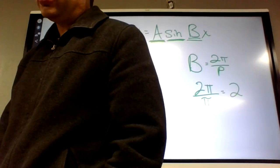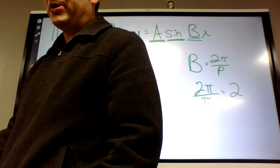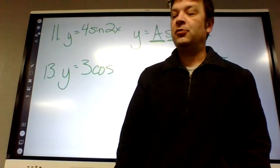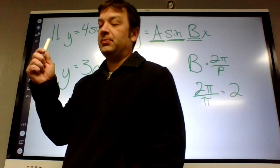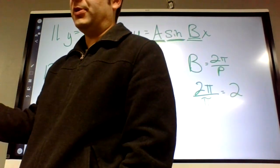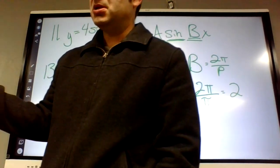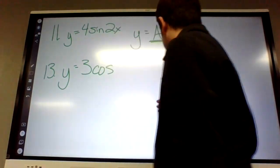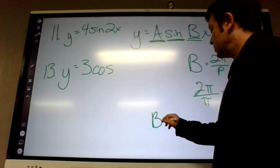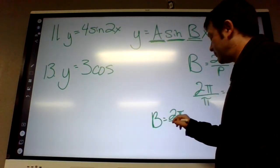So how long does it go before it starts repeating itself? What's the period? Four pi, because it goes from zero to four pi before it gets back to the top of the mountain. So the period is four pi. So the B value is going to be two pi divided by four pi.